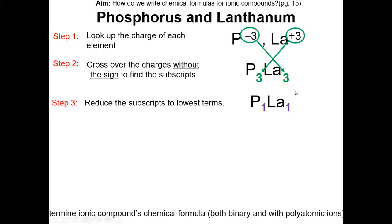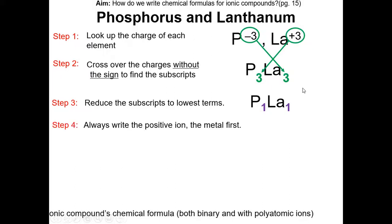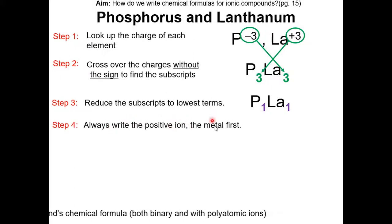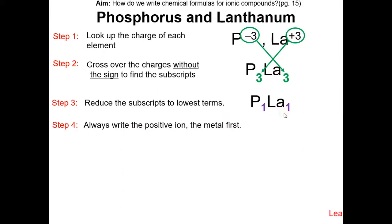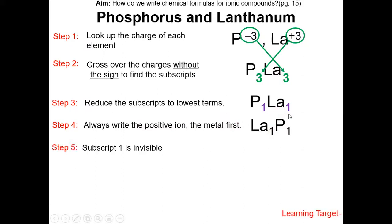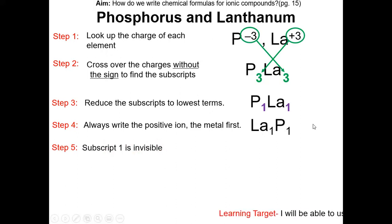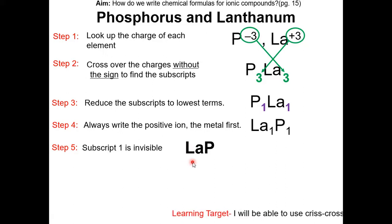If we do that, we get 1 for each. Step 4: always write the positive ion, which is the metal, first. So La is the metal, so we write that first. Subscript 1 is invisible, so we leave out the 1 because it's not needed. So our chemical formula is LaP.